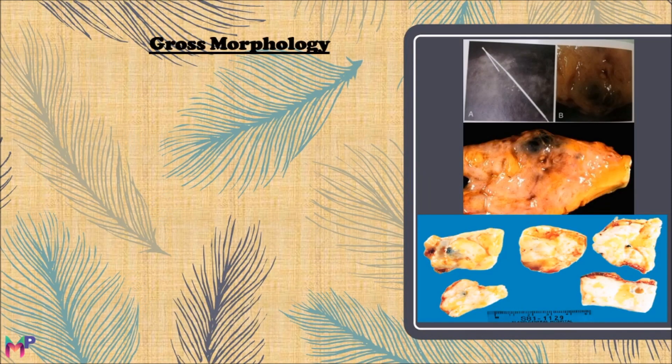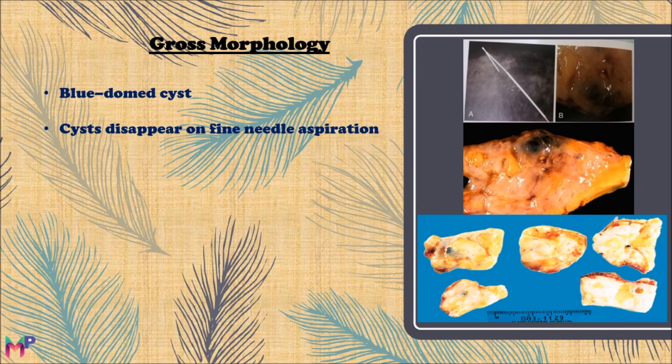On gross morphology, fibrocystic change is characterized by blue dome cysts. Small cysts form and combine to create large cysts. These cysts are filled with turbid, semi-translucent fluid of brown or blue color, giving them a blue dome appearance on gross morphology. Importantly, these cysts disappear on fine needle aspiration, which is a major differentiating feature of fibrocystic changes.